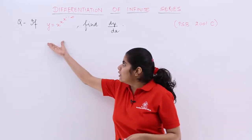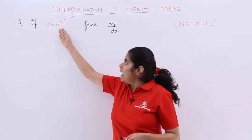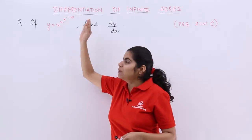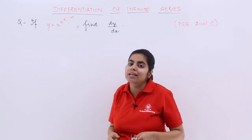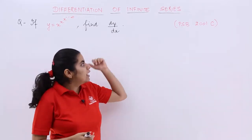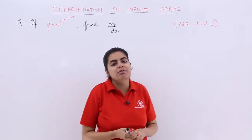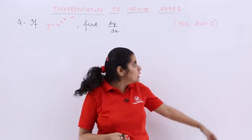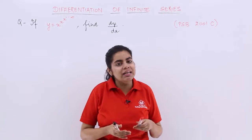The question is: if y is equal to x raised to the power x raised to the power x and so on infinite times, find dy by dx. The question has been asked in some previous board examination in the year 2001 set C.